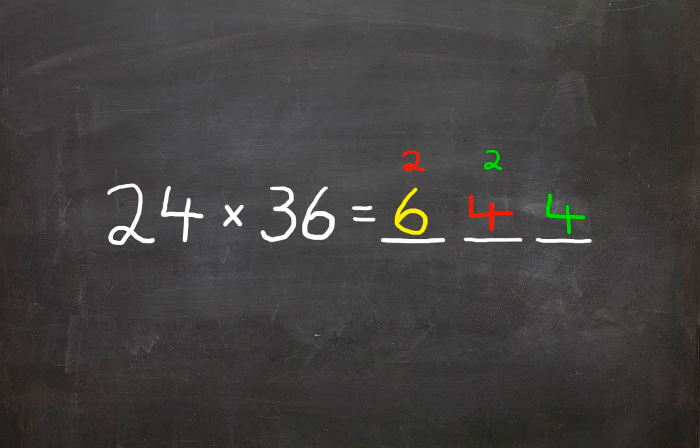Now that we've built our columns up on the right hand side, it's a simple matter of adding them up. And now you know how to quickly multiply any two two digit numbers.